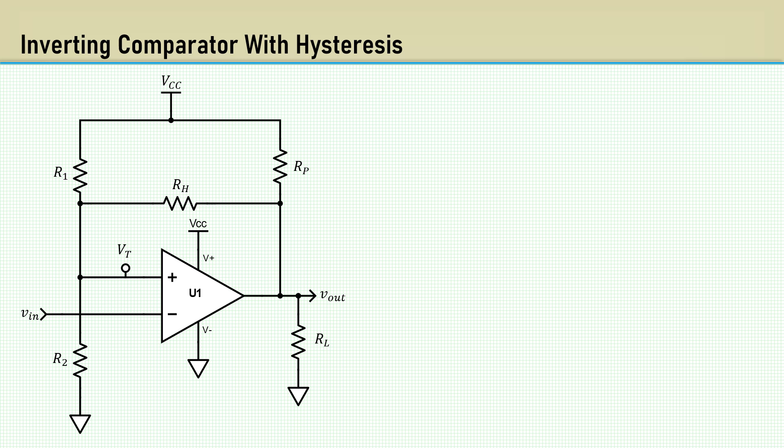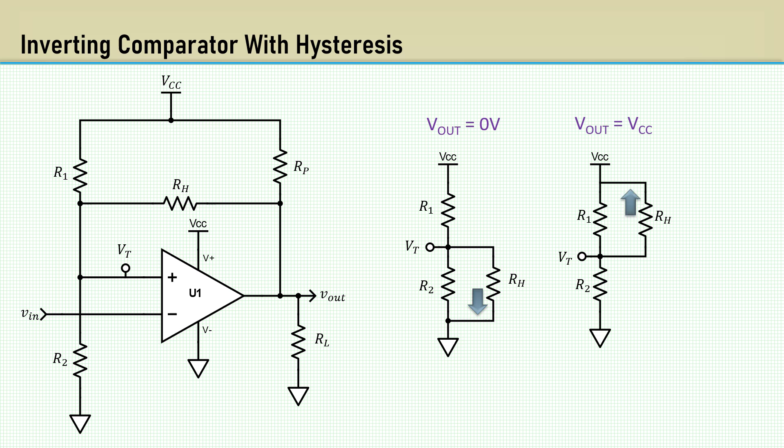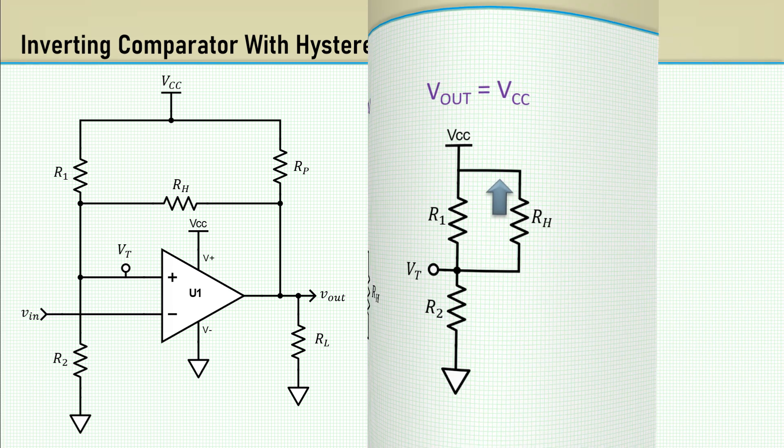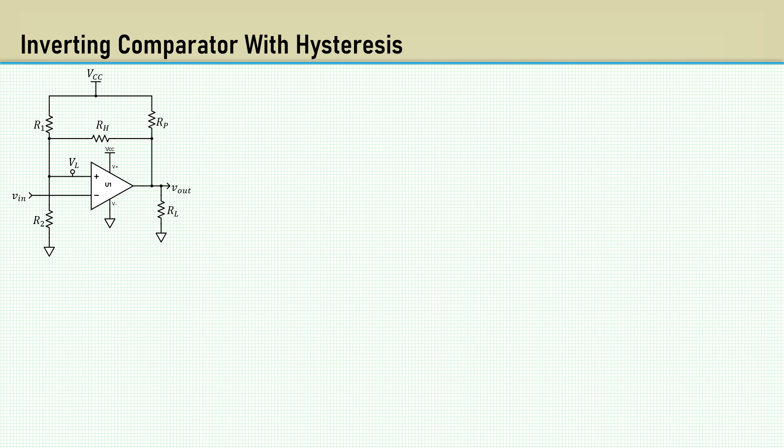Let's look at the basic analysis. When the output is low, RH is connected to ground. When the output is high, RH is connected to VCC. I'm about to show you what I believe is to be the simplest approach for designing hysteresis for an inverting comparator, of which I do not recommend.